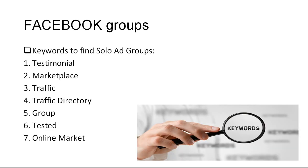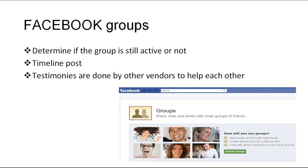That being said, there are various subgroups you can find on Facebook and it's pretty easy to find a group. To find a group, there are several keywords you can use: 1. Testimonial, 2. Marketplace, 3. Traffic, 4. Traffic Directory, 5. Group, 6. Tested, 7. Online Market. These are the select few top keywords used to search for solo ad groups, even though there are various groups to join.